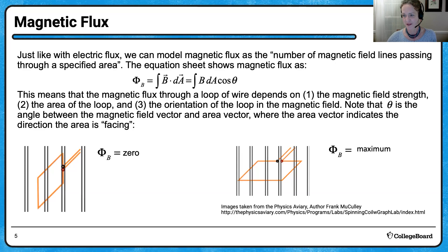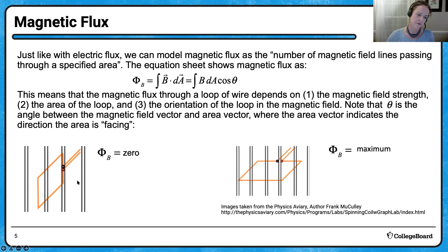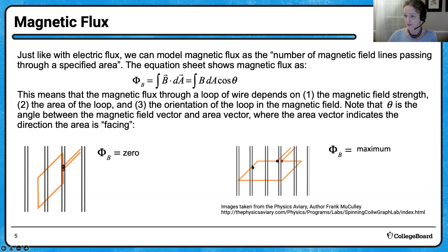Let's talk about flux. I think of it as the number of field lines passing through an area — though technically there are infinite field lines; we just draw a set number to model field strength. If I have a loop of wire oriented parallel to a magnetic field, with field lines flanking the area, there's no flux. However, if the loop is oriented so the field lines pass directly through it, we have maximum flux. Any other angle will give some intermediate flux.